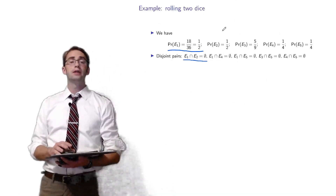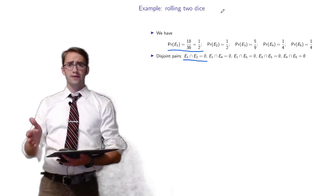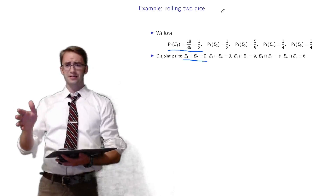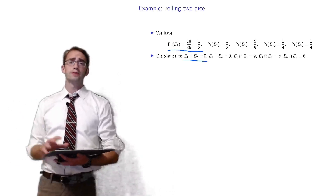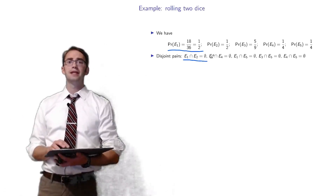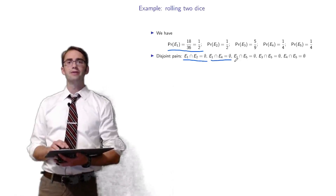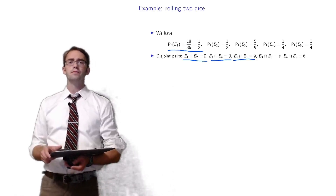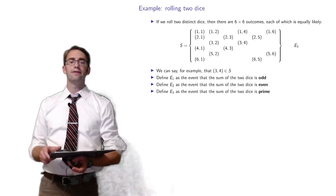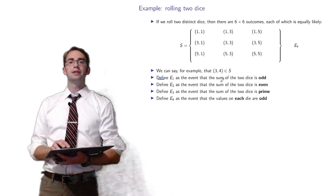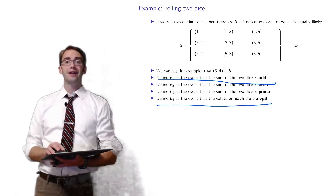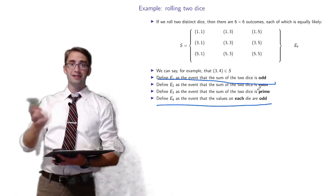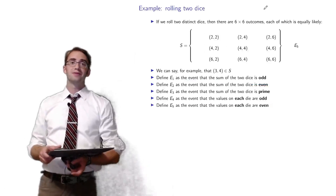E1 intersect E2 is the empty set — E1 is the event the sum is odd and E2 is the event the sum is even, so only one of those could happen. E1 intersect E4 is also empty: E4 requires values on each die to be odd, which makes the sum even, so E1 can't happen simultaneously. E1 intersect E5 is also empty.